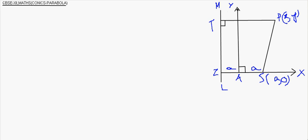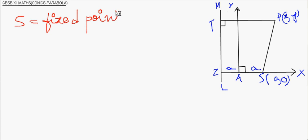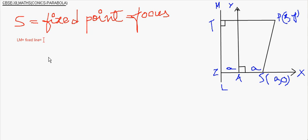Now, let S, that is point S, be the fixed point, which is known as the focus. S is the fixed point. The line LM is the fixed line, which is called the directrix.